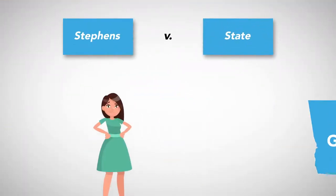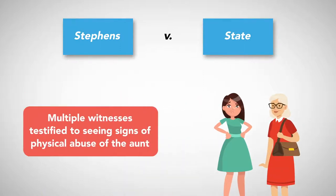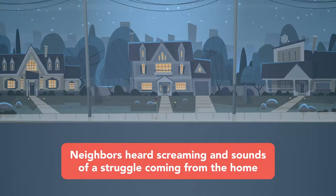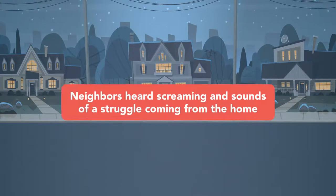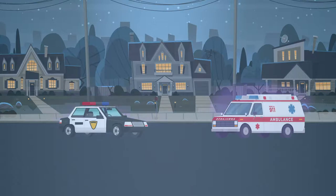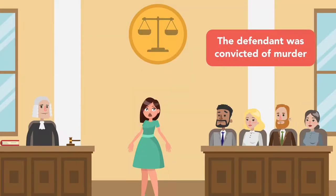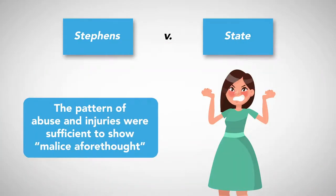For example, in the Georgia case Stevens v. State, the defendant lived with her aunt. Multiple witnesses testified to seeing signs of physical abuse of the aunt. One evening, neighbors heard screaming and the sounds of a struggle coming from the home. Shortly thereafter, emergency technicians arrived and found the aunt dead. The medical examiner found that the aunt's injuries were caused by beatings and abuses over a period of time. The defendant was convicted of murder. Although intent to kill could not be shown, the pattern of abuse and injuries were sufficient to show malice aforethought.